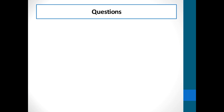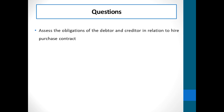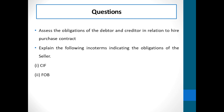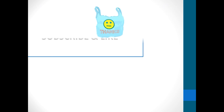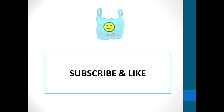Now the questions. Assess the obligations of the debtor and the creditor in relation to a hire purchase contract. Explain the following terms indicating the obligations of the seller: CIF sales and FOB sales. Thank you so much for watching. Remember to subscribe and like.